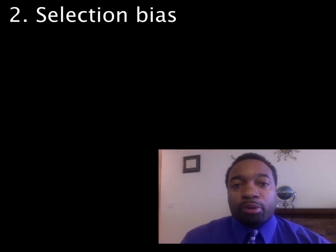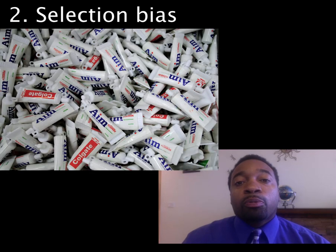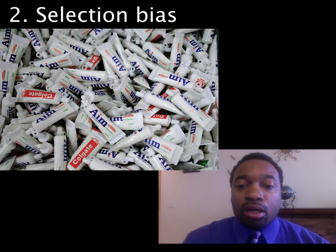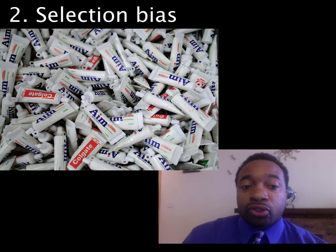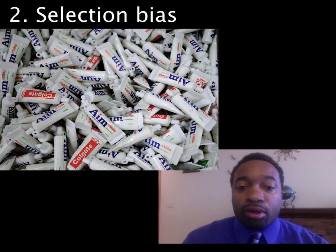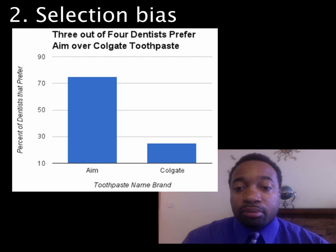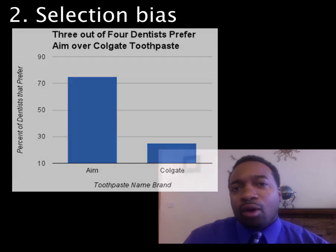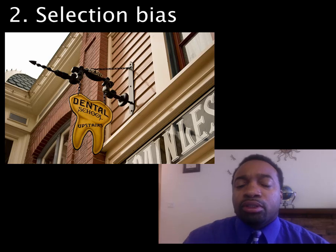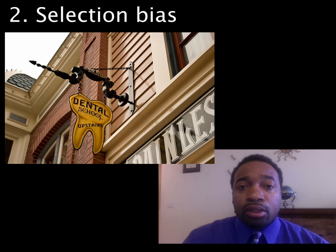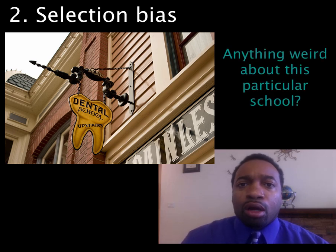Going back to the initial experiment about the dentists — suppose you want to increase the sample size and you go searching for more dentists. You find 400 more dentists to help minimize the sample size error. You survey them and find, again, 75% of them prefer AIM. But on second reflection, you realize that all these dentists come from the same dental school, and you wonder if there could be a problem. It occurs to you that perhaps something is unique about this particular dental school.